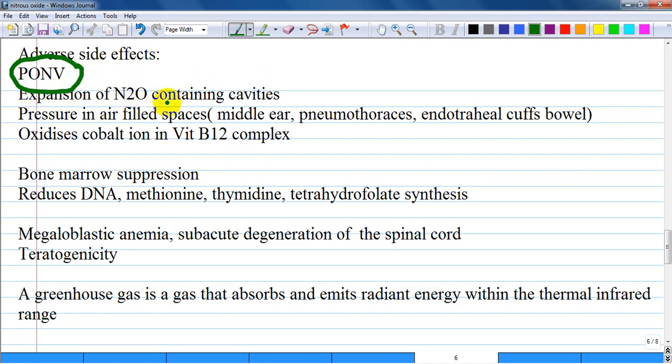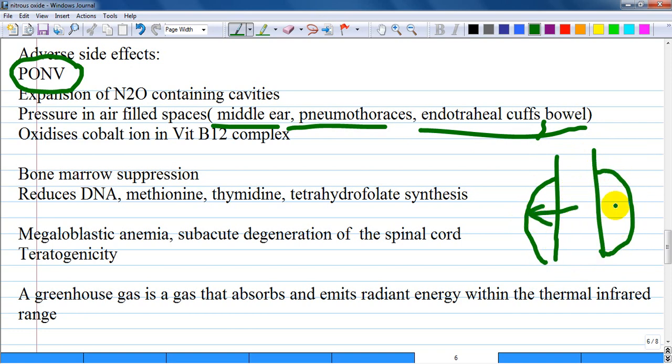Expansion of nitrous oxide containing cavities occurs because nitrous oxide is more soluble than nitrogen and diffuses from blood into air-filled cavities very quickly. Use of nitrous oxide results in increased pressure in air-filled spaces like the middle ear, pneumothoraces, endotracheal cuffs, and bowel. For example, nitrous oxide diffuses inside endotracheal tube cuffs and increases pressure, potentially compressing adjacent tissues.